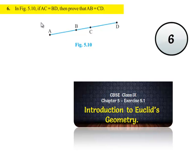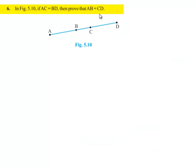Moving on to the sixth question, in figure 5.10, if AC is equal to BD then prove that AB is equal to CD.